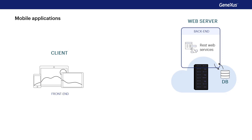So far we've focused on web applications. Now let's look at the architecture of a mobile application. In particular, we'll consider mobile applications that are always connected via Wi-Fi — online applications — which is the most common scenario, although high performance or high availability mobile applications are usually designed offline.